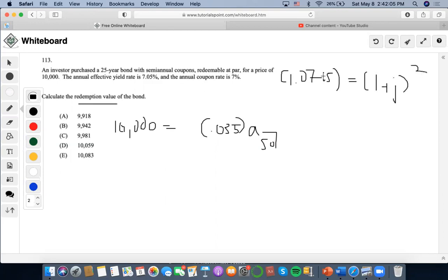We're going to have to find j, the semi-annual rate. I could do 0.07 to the one-half minus one, so then j is going to be 3.464%.